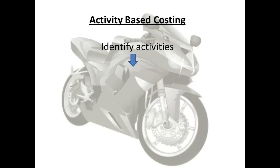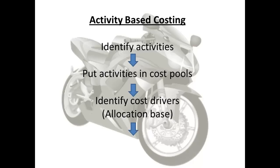Activity-based costing is designed to prevent that happening. The first step is to identify activities. A series of products may all make use of a plastic moulding machine. Each mould is an activity. The moulding machine would become the cost pool. So activities are put into cost pools. The cost drivers for the cost pool are obtained — this means we select the most appropriate allocation base for the cost pool.